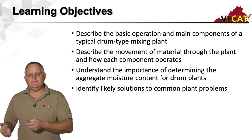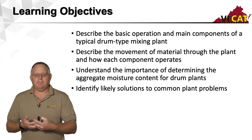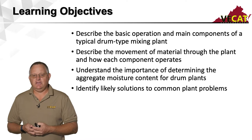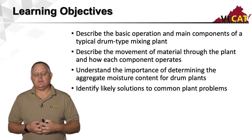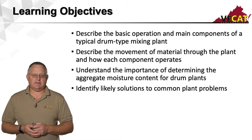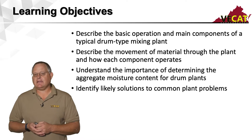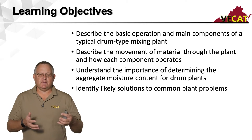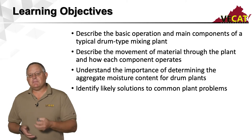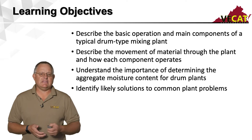We're also going to talk about how the material moves through the plant and how each component operates. One of the main issues at a plant is segregation. Sometimes we don't see it until it's in the field, but the way we handle material at the plant — even starting at the quarry — can impact how a mix behaves. We're going to look at moisture content and why it's important, because moisture content impacts how the AC pumps work so we can make adjustments.